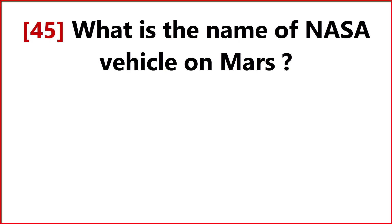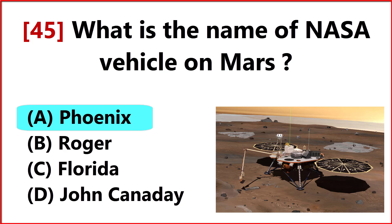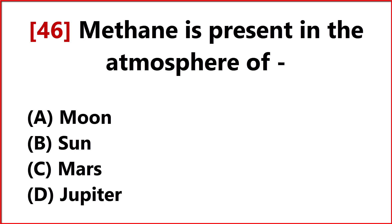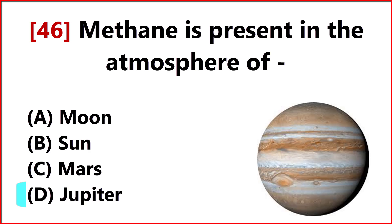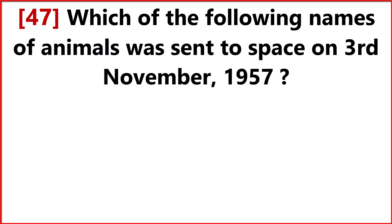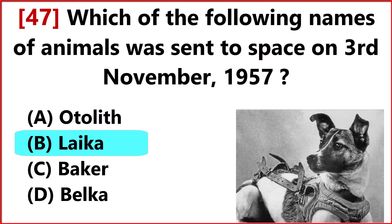What is the name of the NASA vehicle on Mars? Answer Option A: Phoenix. Methane is present in the atmosphere of Answer Option D: Jupiter. Which animal's name was sent to space on 3rd November 1957? Answer Option B: Laika.